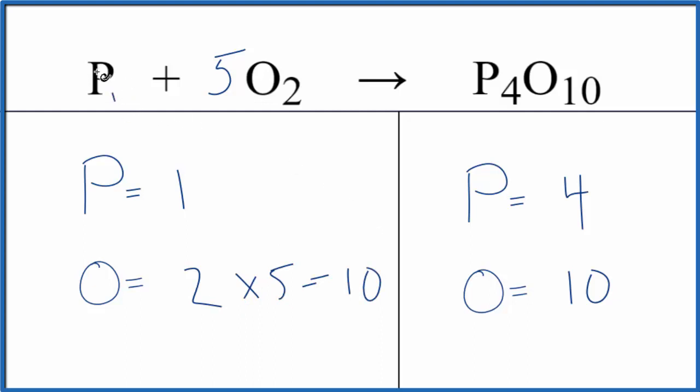And the phosphorus, we have one phosphorus. So let's just put a four in front of that. One times four, that'll give us four. And we're done. This equation is balanced.